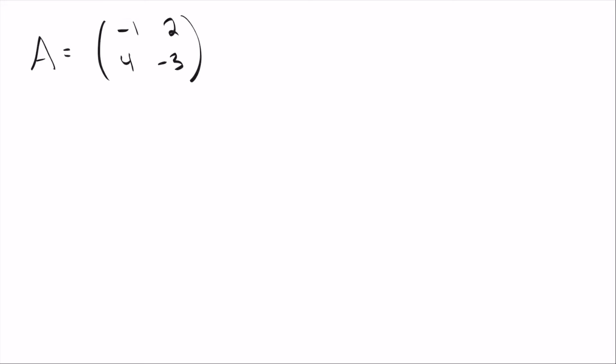We'll start with a simple matrix: negative 1, 2, 4, negative 3. There's nothing special about these numbers. The first step is to find the characteristic polynomial, which means you take A, the matrix we've got, and subtract lambda times I. Remember, I is just ones along the diagonal and zeros everywhere else — the identity matrix.